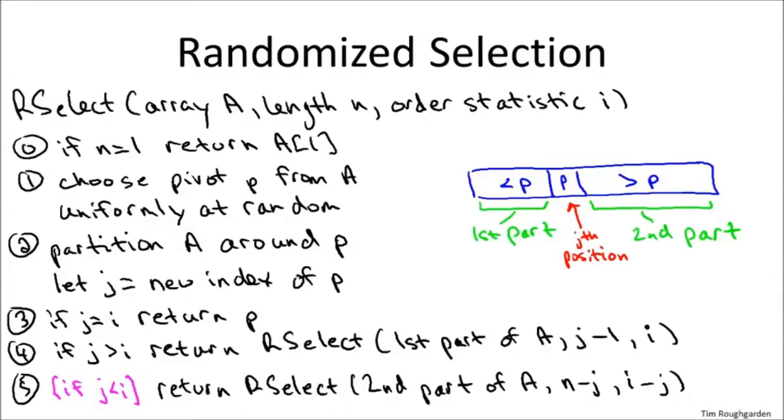So call that pivot p. Now do the partitioning. Remember, partitioning puts all of the elements less than the pivot to the left of the pivot. We call that the first part of the partitioned array. Anything bigger than the pivot gets moved to be right of the pivot. We call that the second part of the array. And let j denote the position of the pivot in this partitioned array. Equivalently, let j be what order statistic that the pivot winds up happening to be. So if we happen to choose the minimum element, then j is gonna be equal to one. If we happen to choose the maximum element, j is going to be equal to n, and so on.